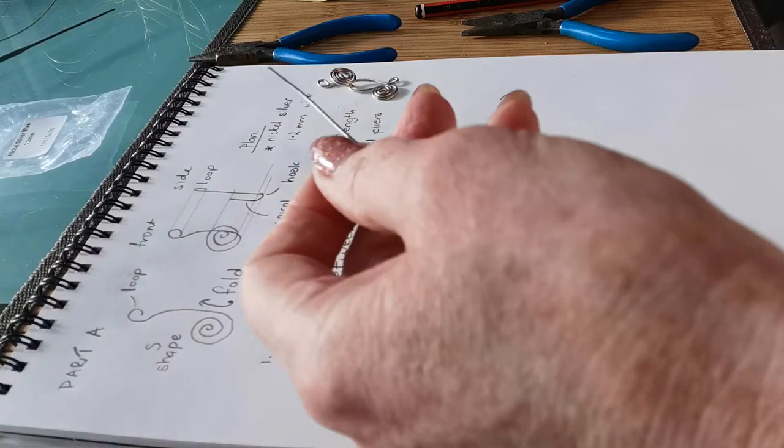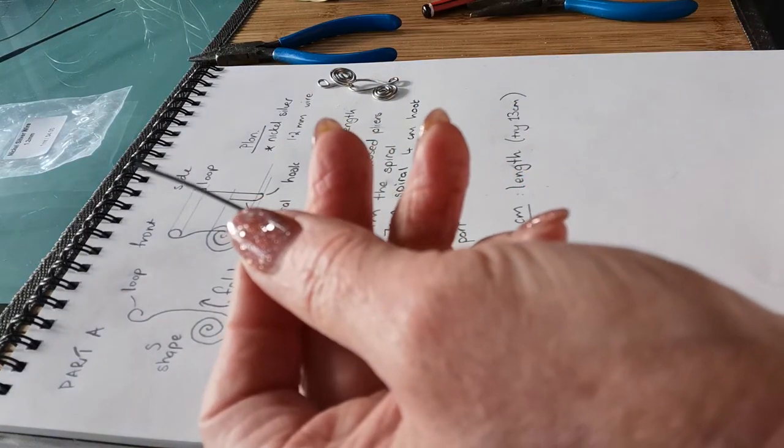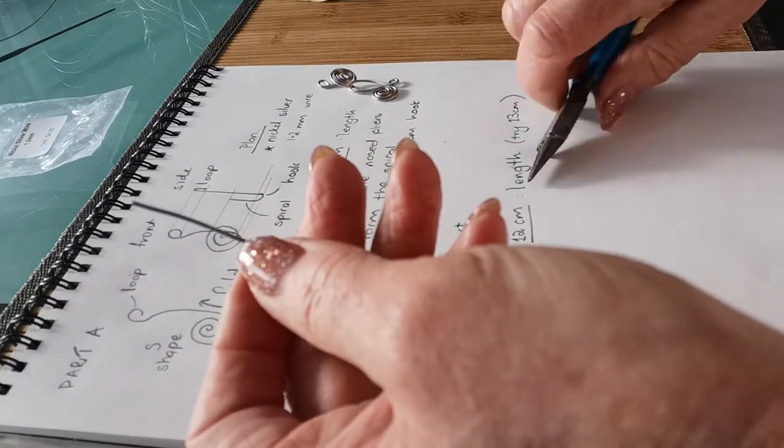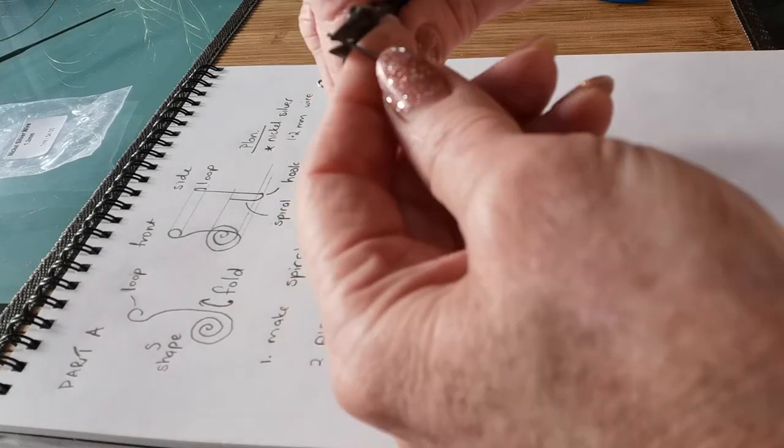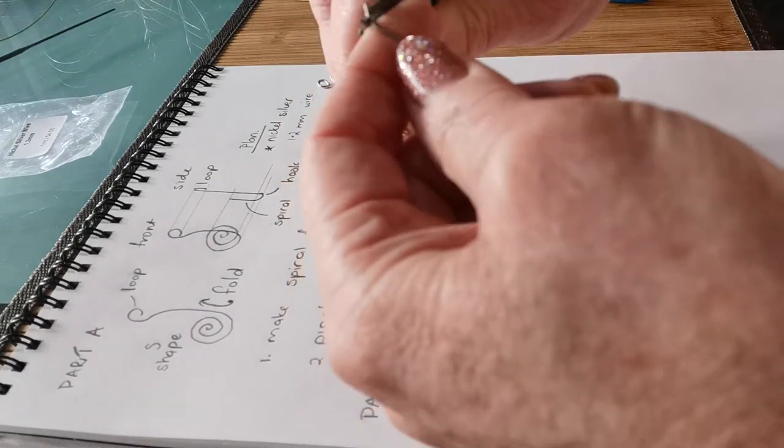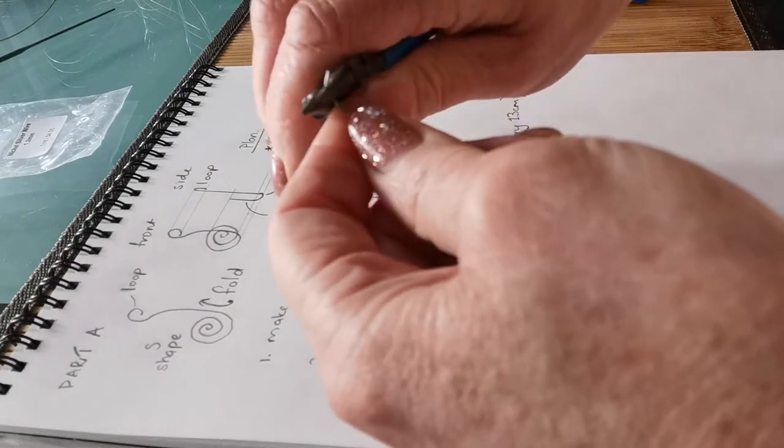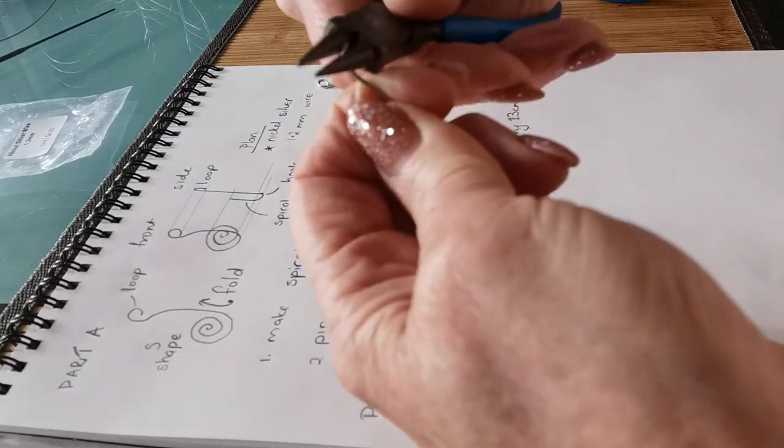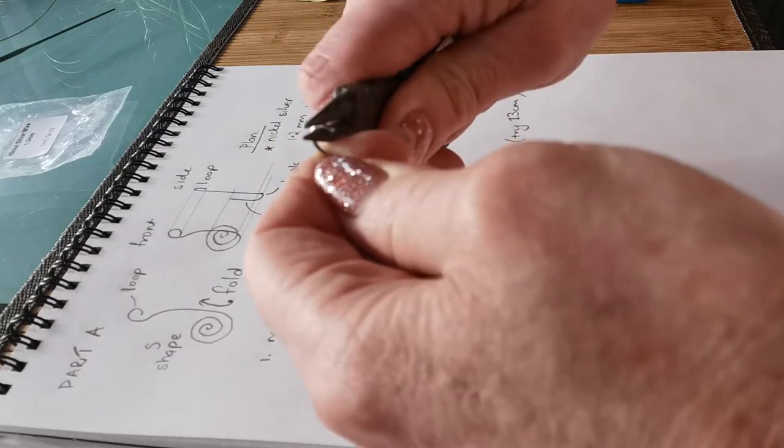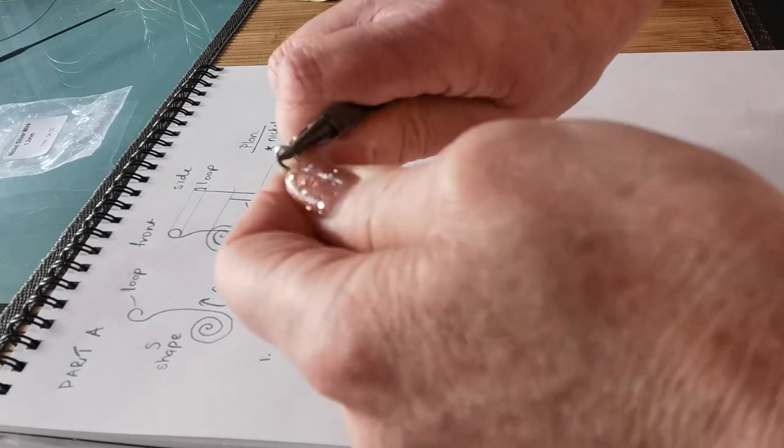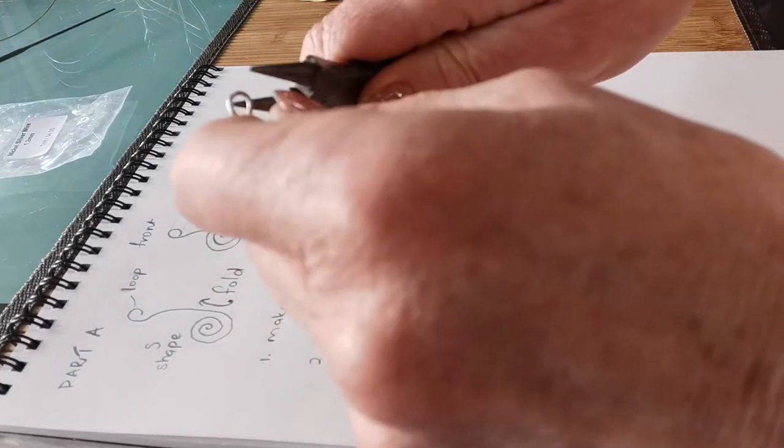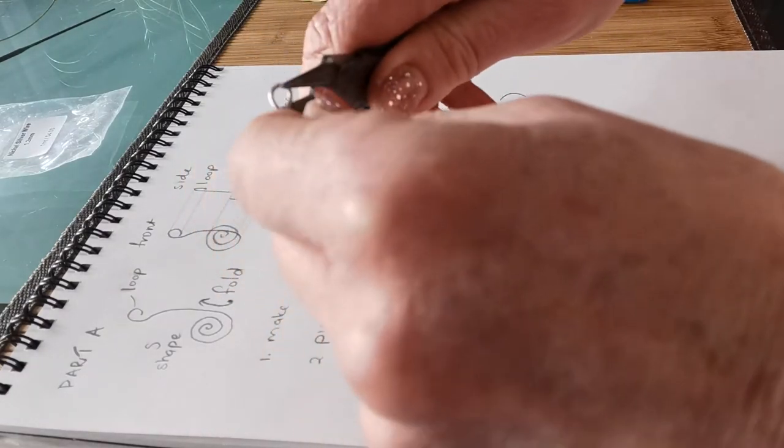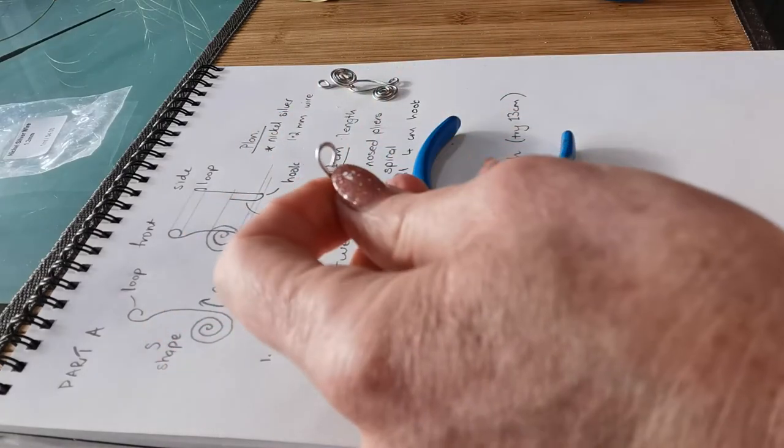On the other side I'm going to create the loop which would be the way I would attach my hook to my cord. This time, because I'm actually making a loop not a tight pinch, I'm going to use the medium, perhaps in the middle of my round nose pliers. I'm making the loop here.